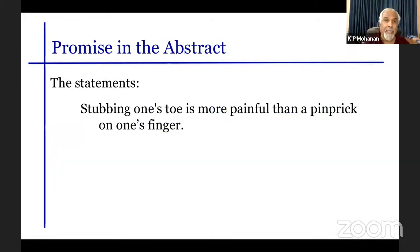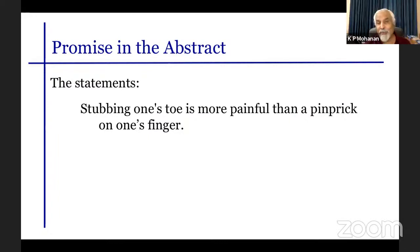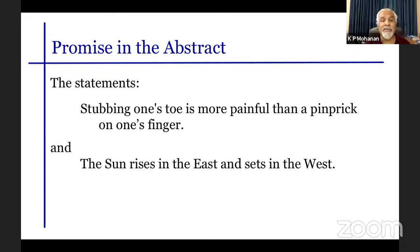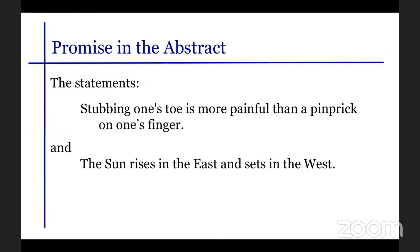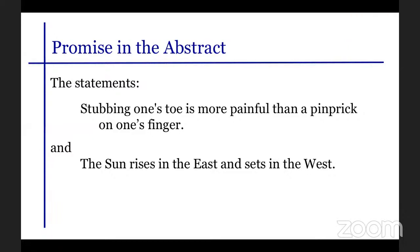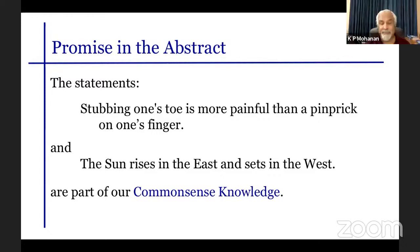To take another example, we all know from experience that stubbing one's toe is more painful than a pinch on one's finger. You don't learn this in school or college or in a textbook; you learn this from experience. Similarly, the sun rises in the east and sets in the west — this is our experience. But that doesn't mean the sun moves around the earth; academic knowledge tells us the earth revolves around the sun. Such statements are part of common sense knowledge.